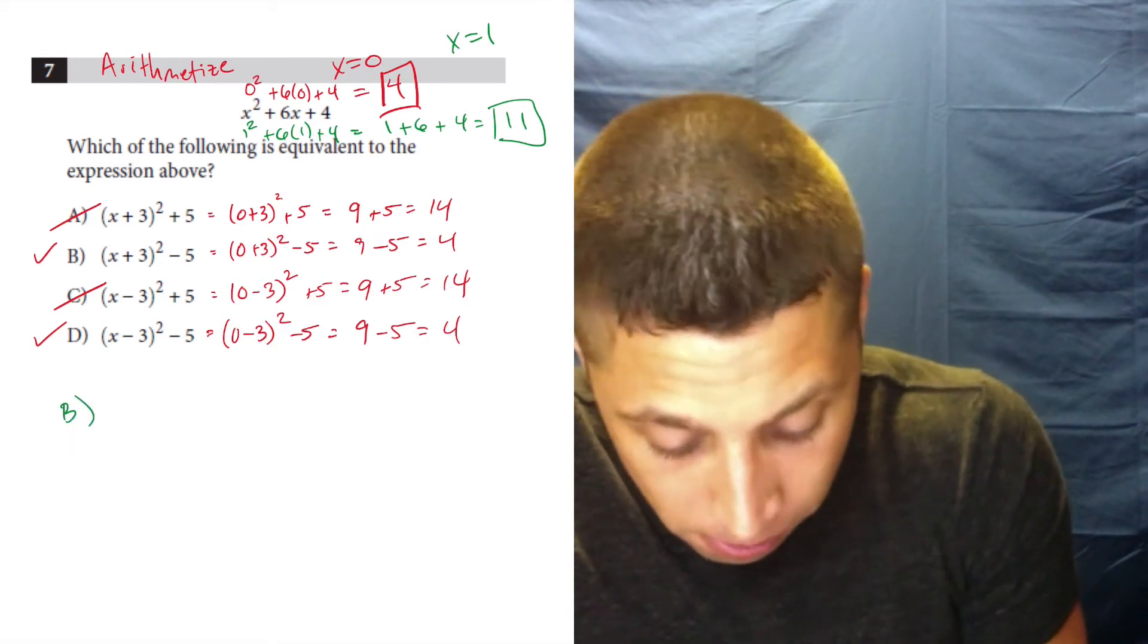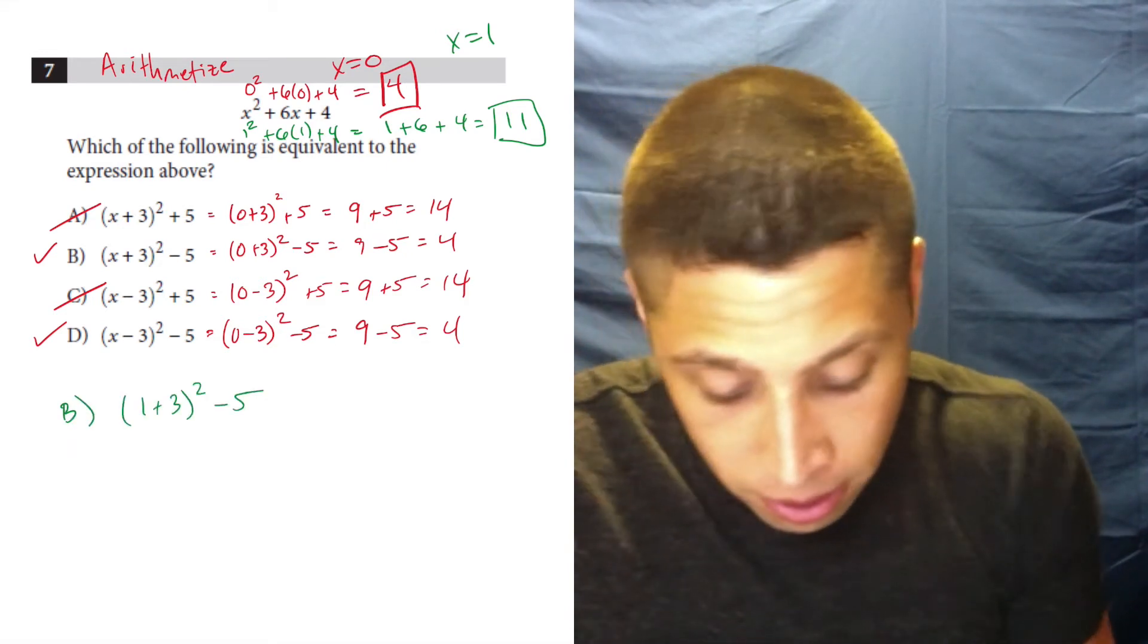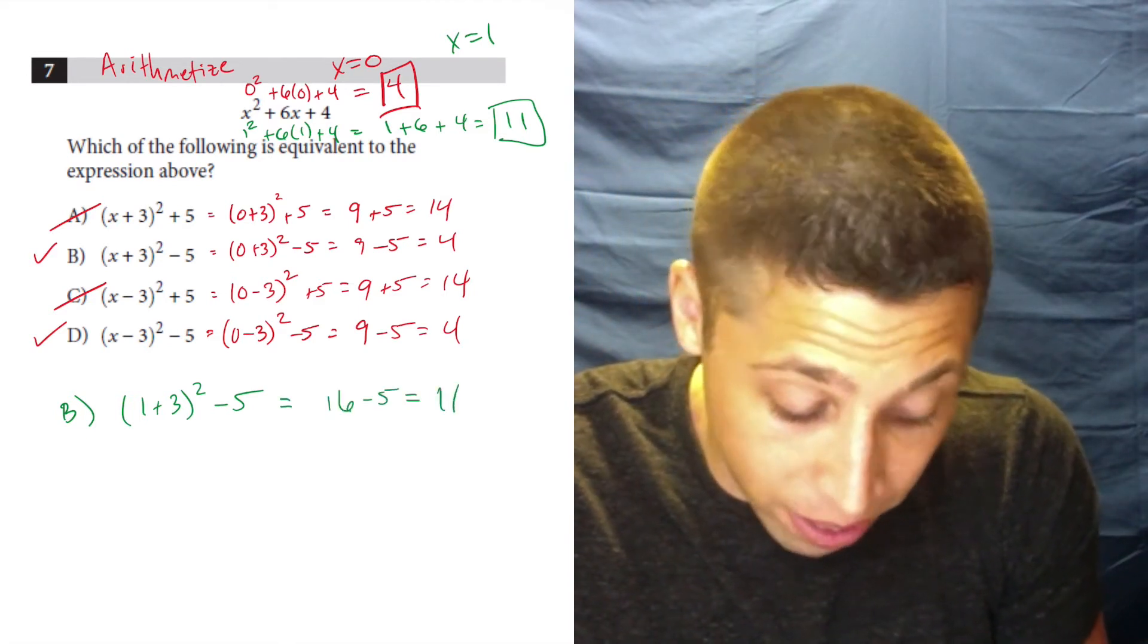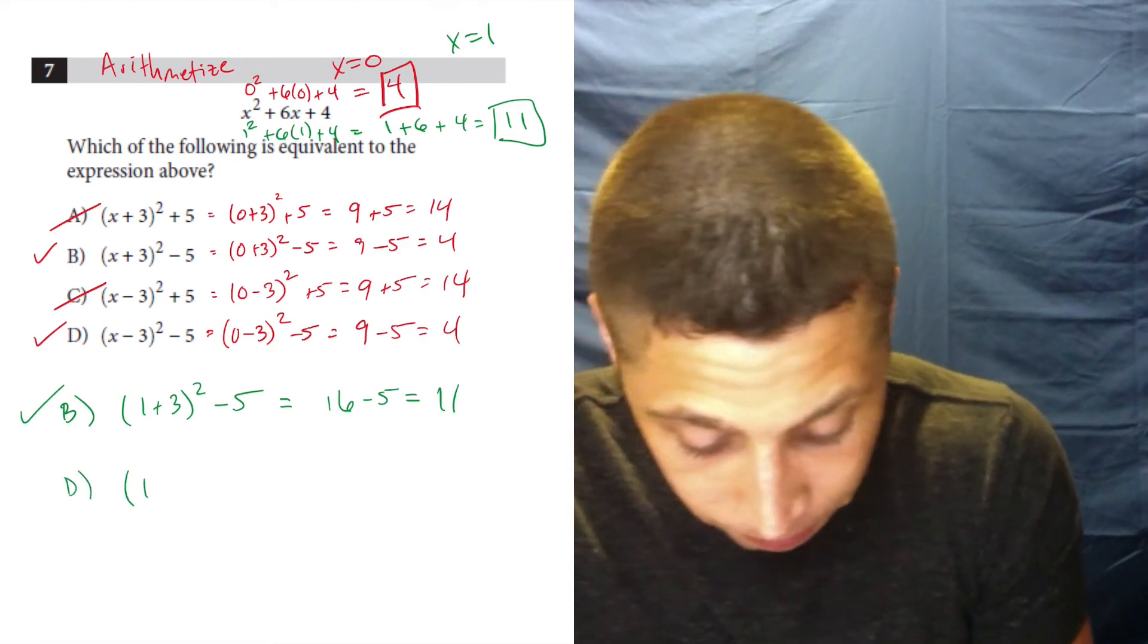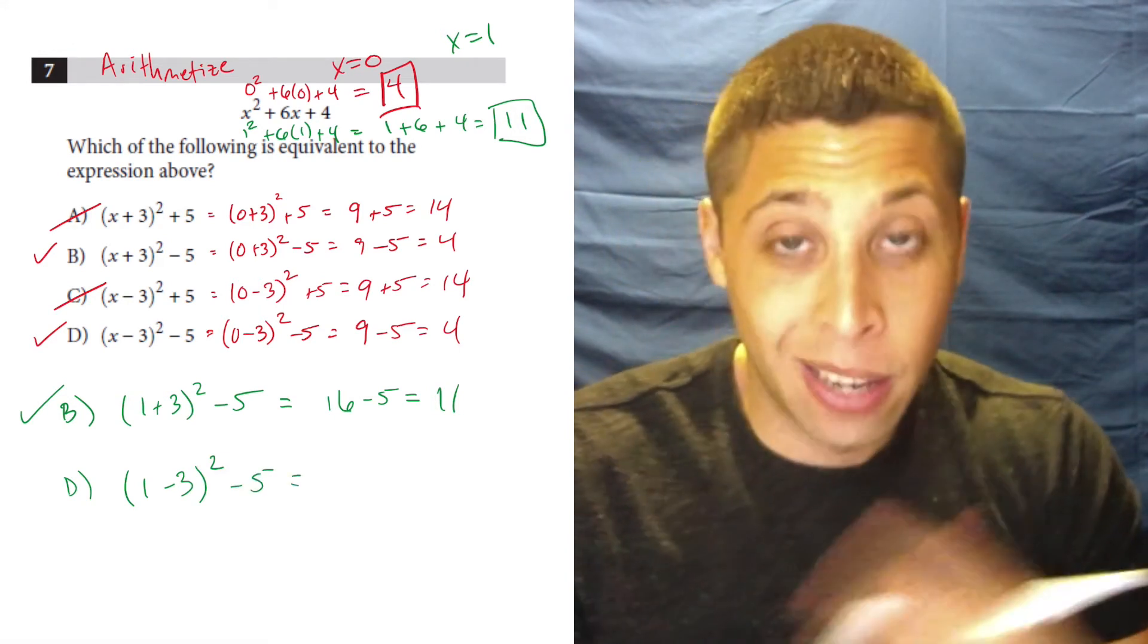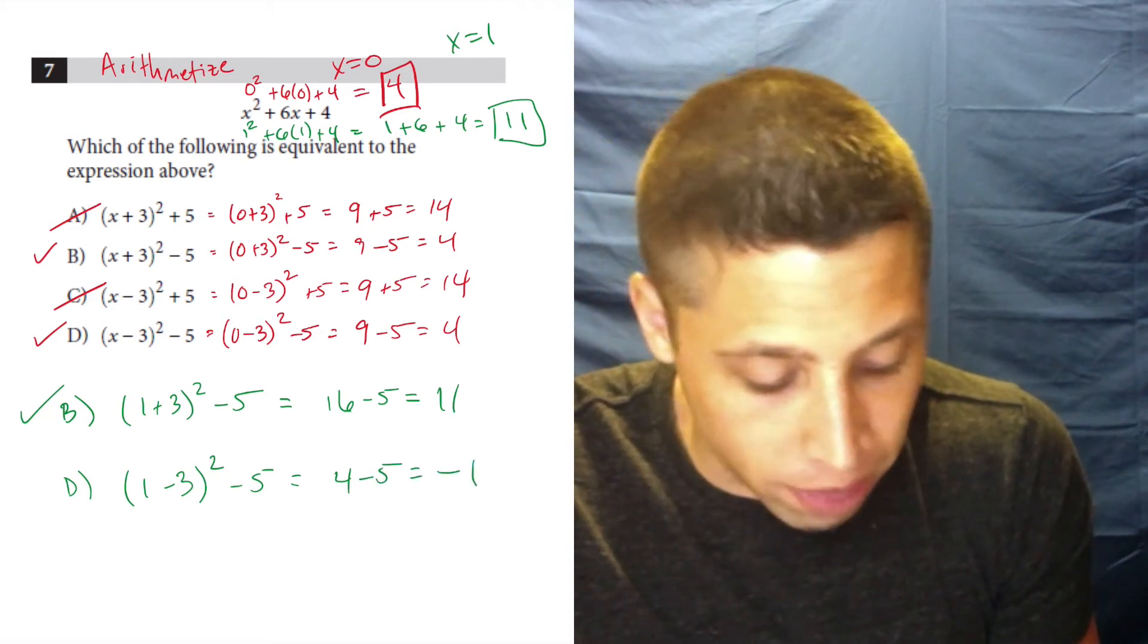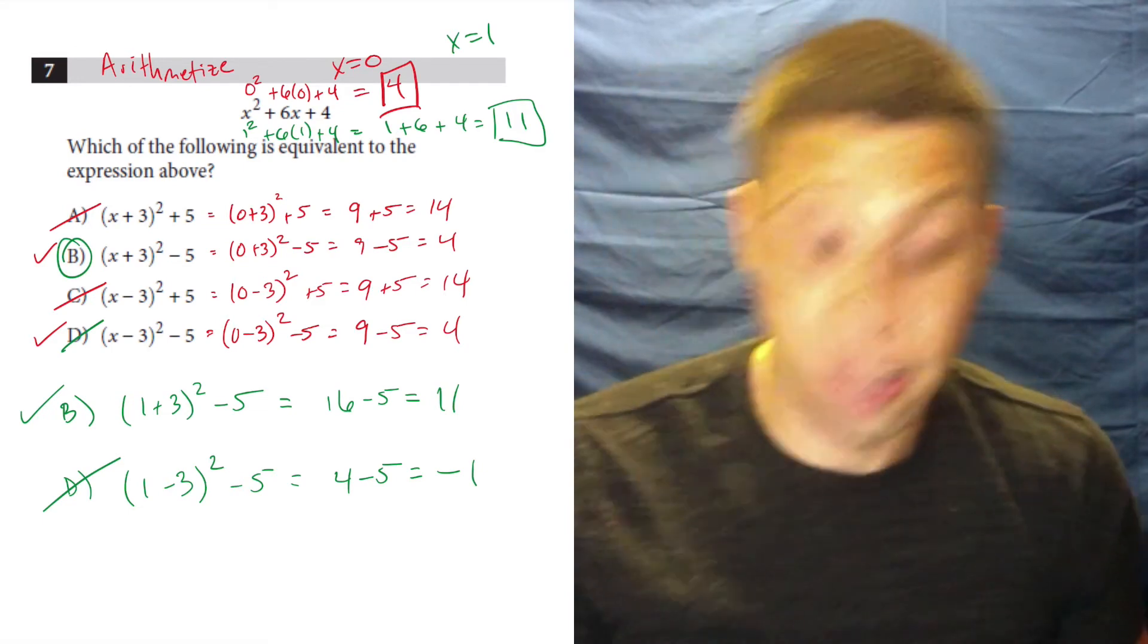So we try B, and it's one plus three squared minus five. That's four squared, which is 16 minus five, which is 11. Let's look at D. One minus three squared minus five. One minus three is negative two. Negative two squared is four. Four minus five is negative one. Not 11, meaning B is the answer.